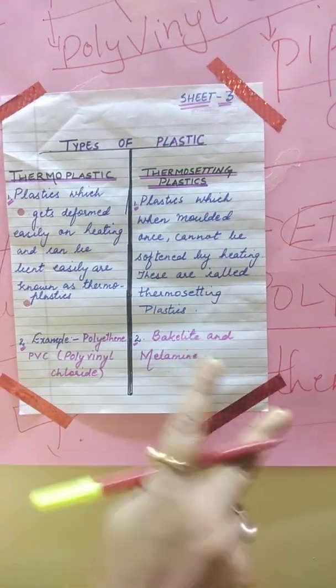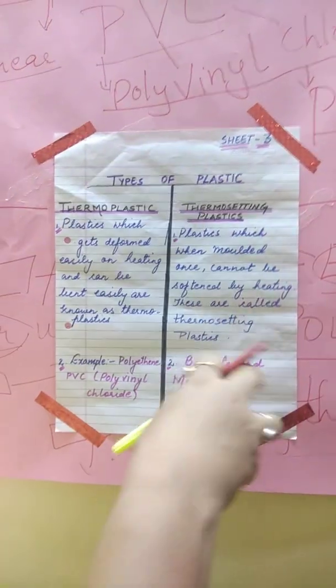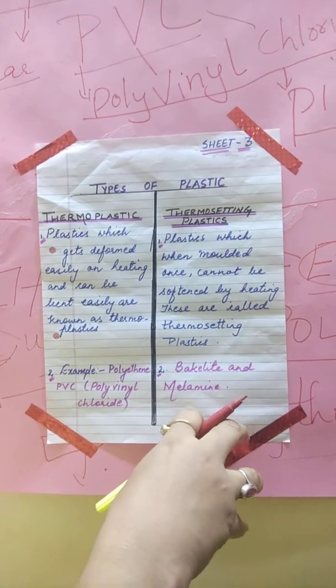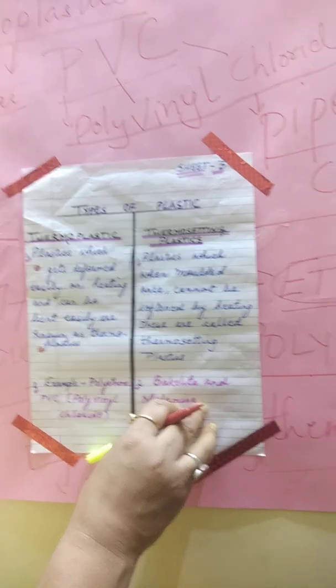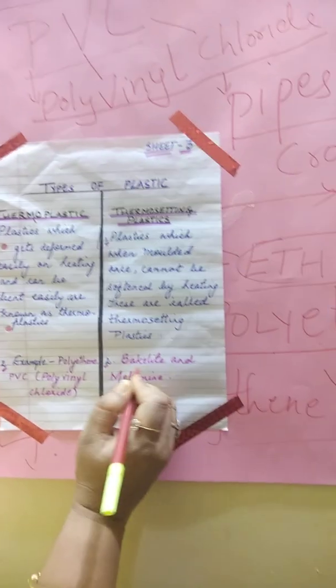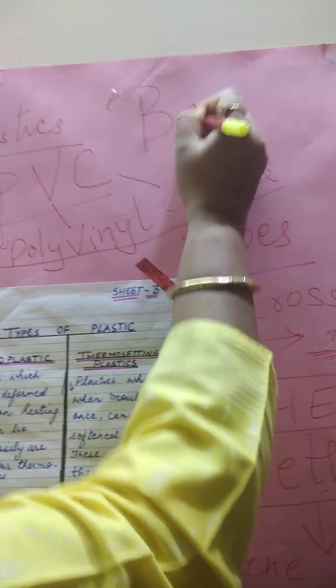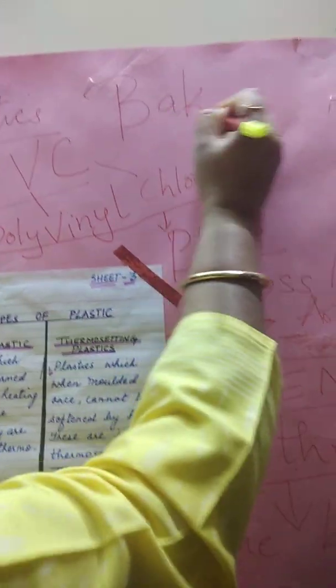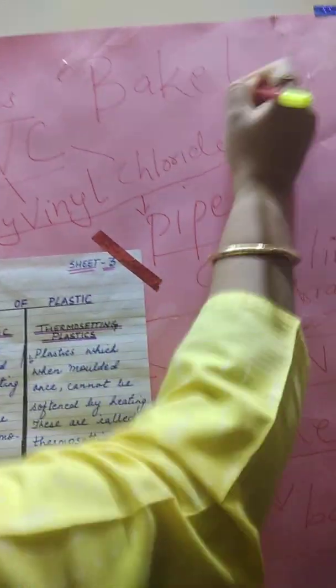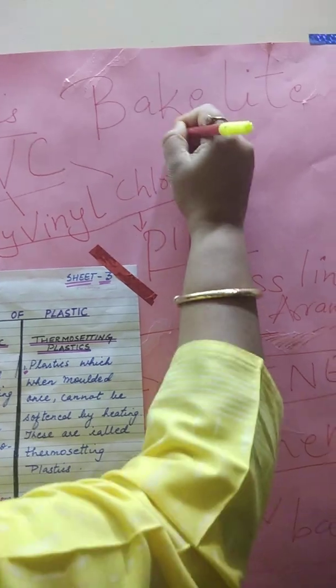The two common examples of thermosetting plastics are Bakelite and melamine. There are more which I will explain in the next class, but the two common examples are Bakelite and melamine.